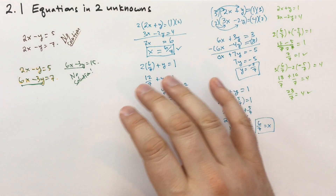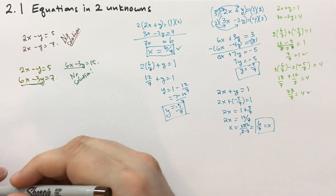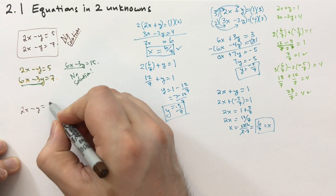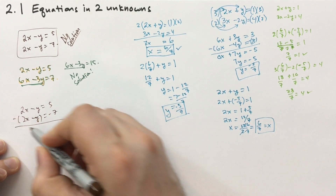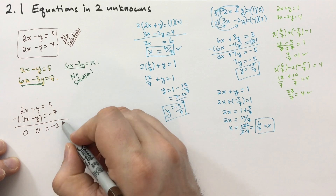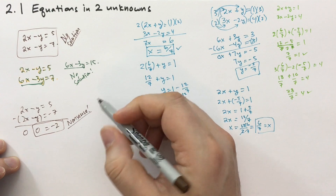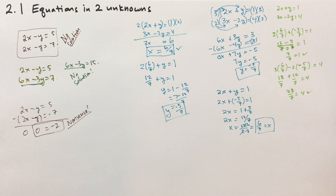As you try to solve, you're going to run into problems. If you naively take 2x minus y equals 5 and subtract 2x minus y equals minus 7, you get 0 equals minus 2, which is complete nonsense. 0 and minus 2 are two different numbers. That's one way you can tell it doesn't have a solution — you just try to approach it and find that you can't.